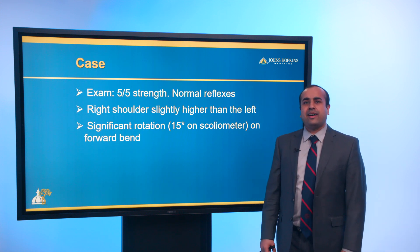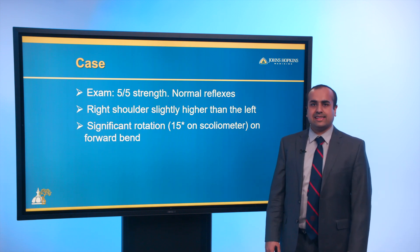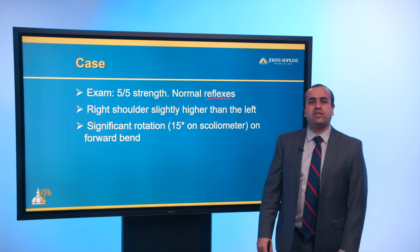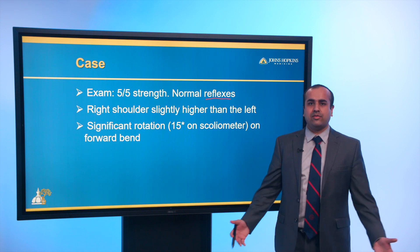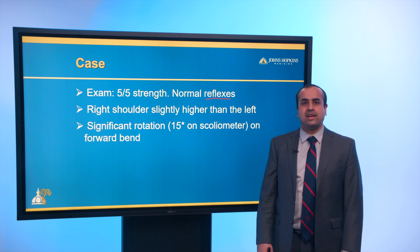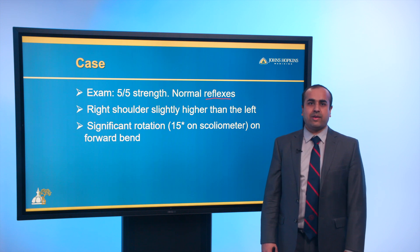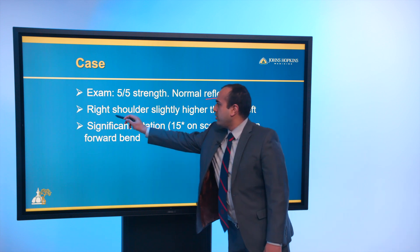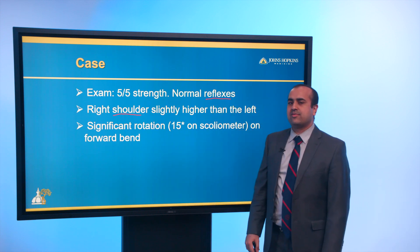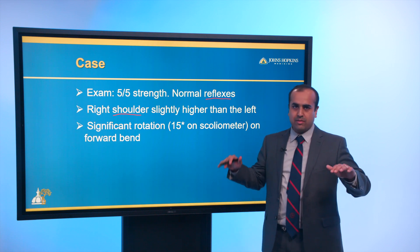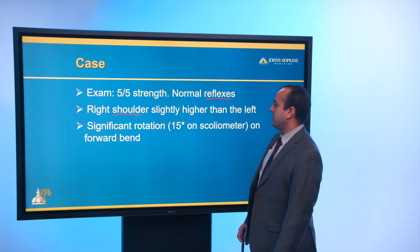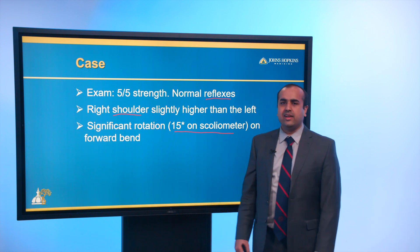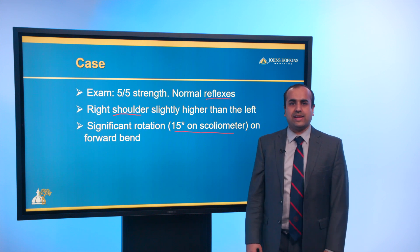On exam, she had 5 out of 5 strength and normal reflexes. Reflexes are a very important part of the spine exam. For every patient who presents with scoliosis, I also examine their abdominal reflexes, which give you clues about whether there are any spinal cord deformities or spinal cord issues. Her right shoulder was higher than her left — patients with scoliosis frequently present with shoulder imbalance. She had significant rotation, defined by 15 degrees on the scoliometer on forward bend.